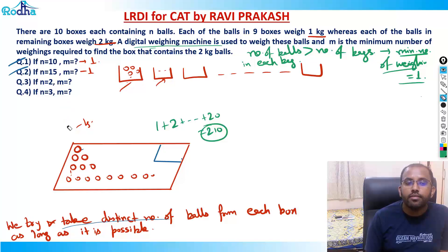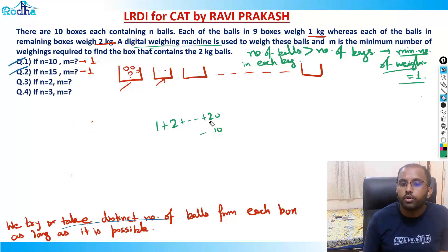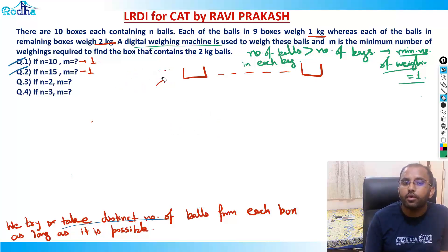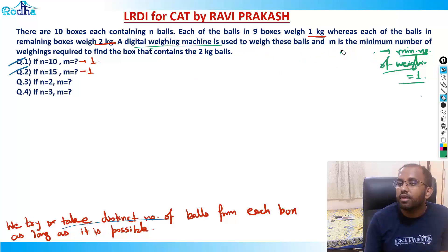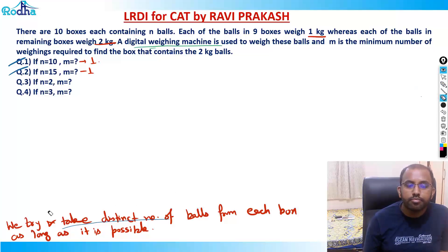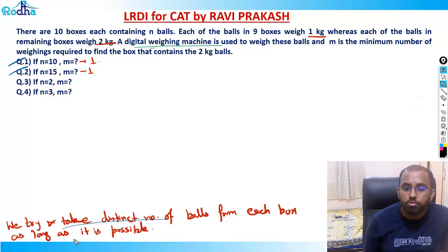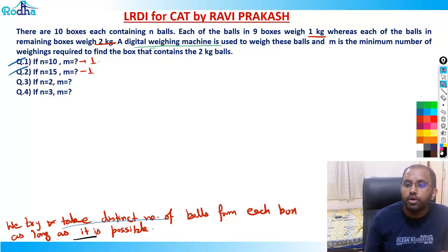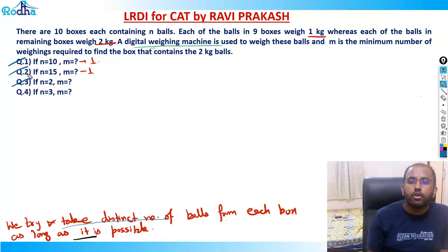The third question has n equal to 2, meaning each box has only 2 balls. Now the same logic can't apply because the number of balls is less than the number of bags. If I try to pick distinct numbers, I can only pick either one or two. So I'll think about it differently.